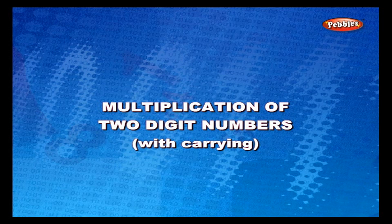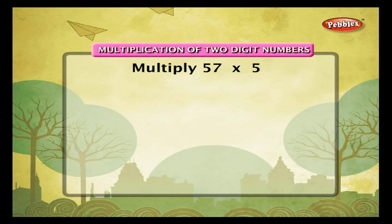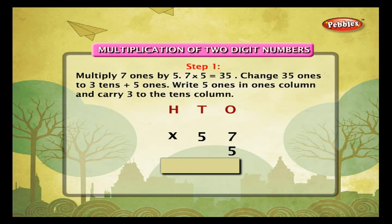Multiplication of two-digit numbers with carrying. Example: multiply 57 by 5. Arrange the numbers in a column. Multiply 7 ones by 5 — 7 into 5 is equal to 35.